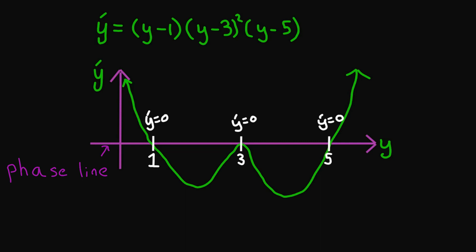Now I'm going to include arrows on the horizontal axis just like the previous example. Starting left of 1, y prime is greater than 0, so y is increasing — our arrow points to the right. Between 1 and 3, y prime is less than 0, so y is decreasing — our arrow points to the left. To the right of 5, y prime is greater than 0, so y is increasing, and our arrow points to the right.